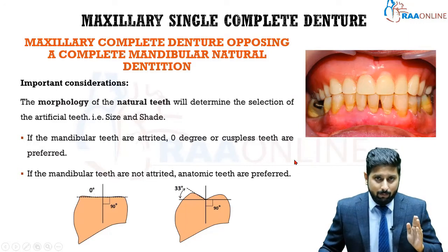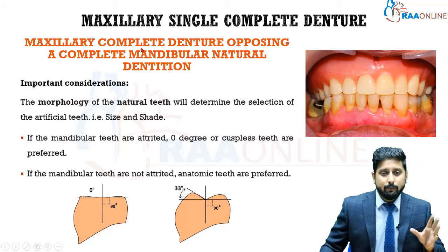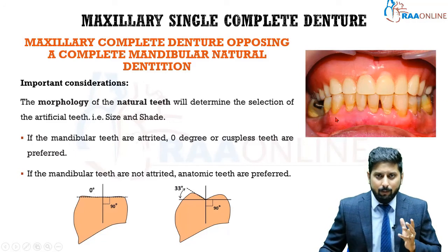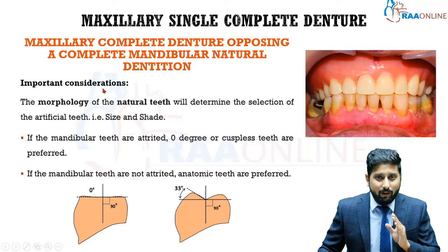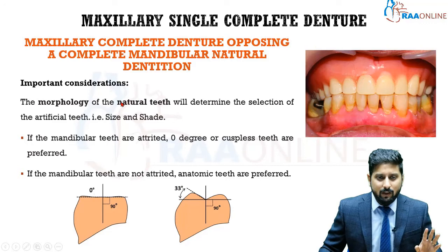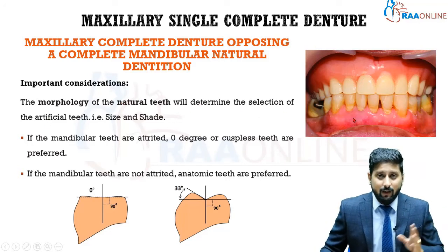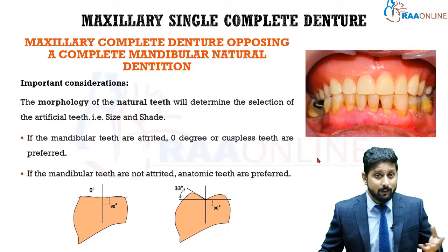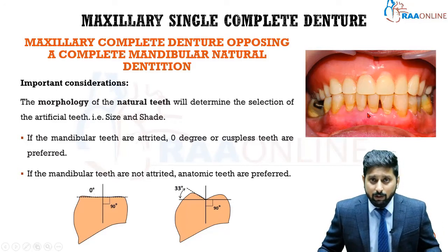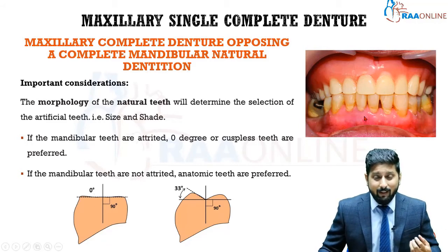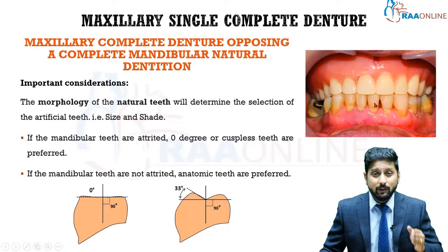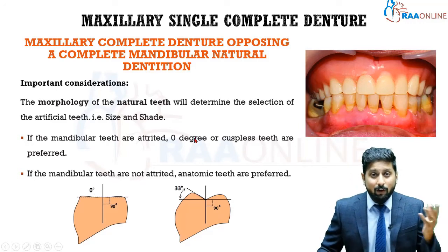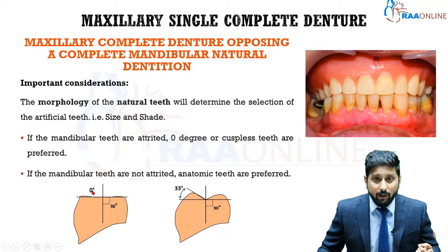Now let us look at the first situation: maxillary complete denture opposing a completely natural mandibular dentition — meaning all teeth are present in the mandibular arch. The first and foremost important consideration is that the morphology of the natural teeth will determine the selection of artificial teeth. Normally when you select artificial teeth for a complete denture patient you have no reference, but here you already have the shape, size, and shade of the opposing natural teeth available.